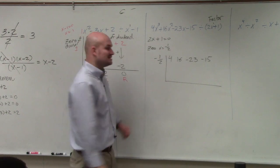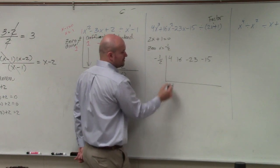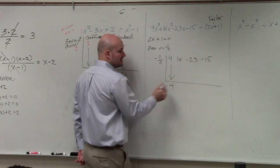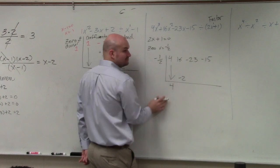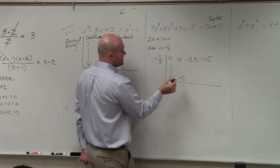Again, following my step-by-step process, I bring down the 4, which is like my freebie. 4 times negative 1 half is negative 2. 16 plus negative 2...